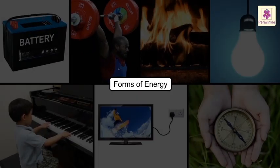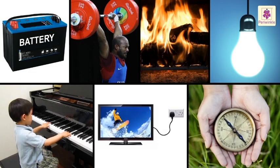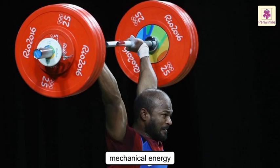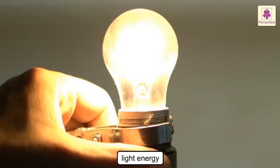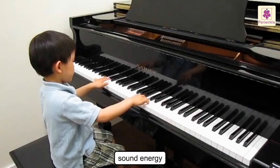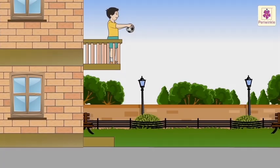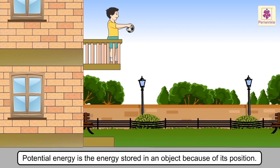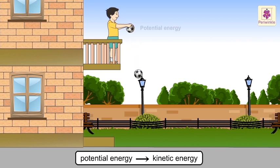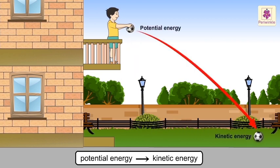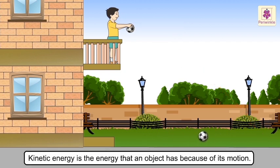Forms of energy. Energy exists in many forms. Chemical, mechanical, heat, light, sound, electrical and magnetic energy are some forms of energy. Energy can easily change from one form to another. Let us observe this in case of potential and kinetic energy. Potential energy is the energy stored in an object because of its position — the position gives it the ability to do work in the future. As soon as the ball is dropped, the potential energy is converted into kinetic energy. Kinetic energy is the energy that an object has because of its motion.